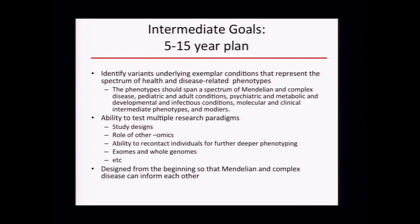As for intermediate goals, we would identify variants underlying exemplar conditions that represent the spectrum of health and disease-related phenotypes. NHGRI is not going to be able to do all diseases, so we thought it was important that we'd form partnerships with other ICs and the private sector and identify exemplar conditions that will serve to expand the effort. The phenotypes would span a spectrum of Mendelian and complex diseases, and we assumed from the beginning that Mendelian diseases would be one of them, forming an important exemplar. It would also cover pediatric and adult diseases, spanning psychiatric, metabolic, developmental, and infectious disease.